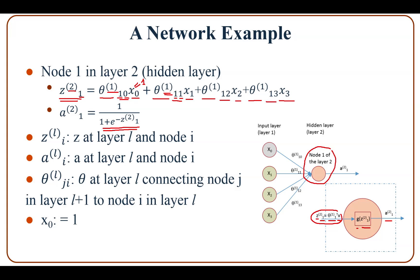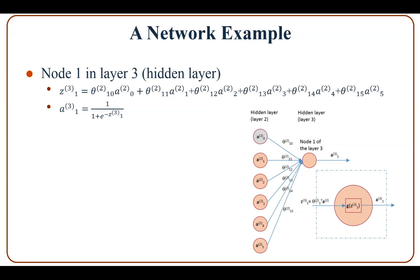g is a sigmoid function — basically it is 1 divided by 1 plus e to the negative z. Similarly, we look at node one in layer three. Layer three is also a hidden layer. z³₁ is the result of the summation processor — z³₁ means z at layer three, node one.